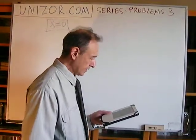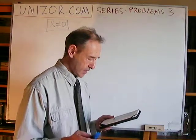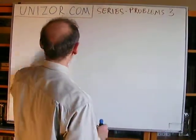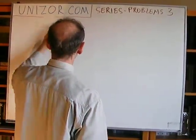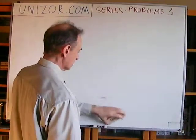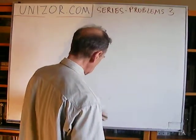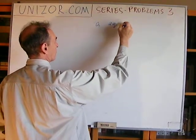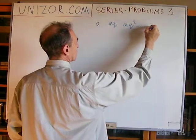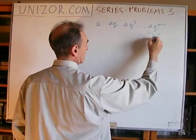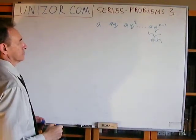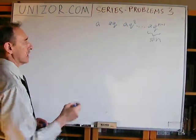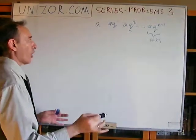Find the quotient of a geometric progression if each element, starting from the second, equals the difference between its two immediate neighbors. So you have to find the quotient Q of a geometric progression which has certain properties. The nth term of this sequence must satisfy a specific condition.